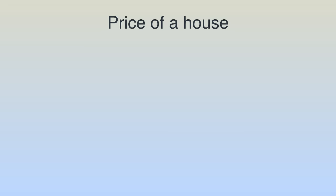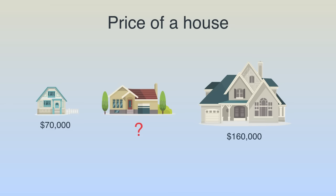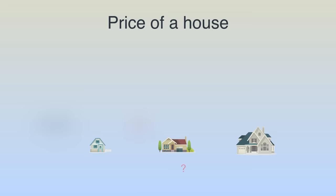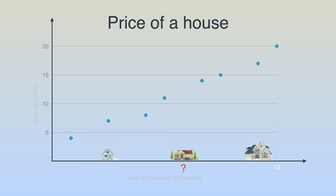Let's go to the first example. We're studying the housing market and our task is to predict the price of a house given its size. We have a small house that costs $70,000 and a big house that costs $160,000, and we'd like to estimate the price of a medium-sized house. We put them in a grid where the x-axis represents size in square feet and the y-axis represents price in dollars. Using collected data as blue dots, the small house is at $70,000 and the big house is at $160,000.